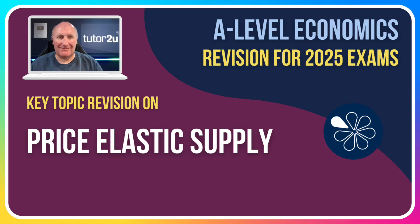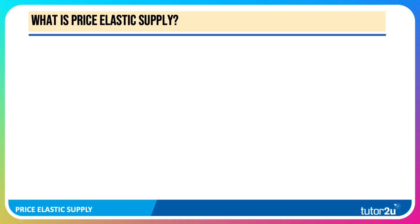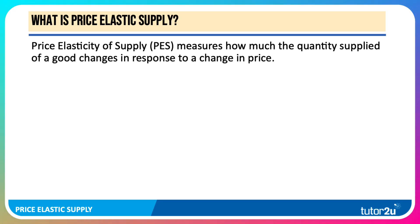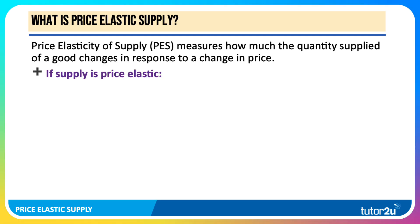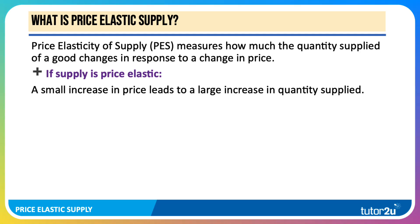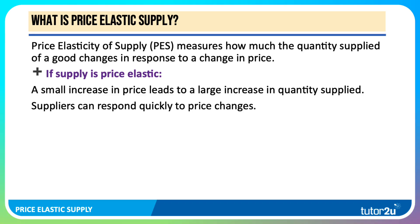This revision video looks at price elastic supply. Elasticity of supply measures the responsiveness of supply of a good or service to changes in price. If supply is price elastic — that's a coefficient of elasticity of supply of more than one — then a small increase in price leads to a larger increase in quantity supplied. Suppliers, producers, and manufacturers can respond quickly and easily without a significant rise in cost to price changes.